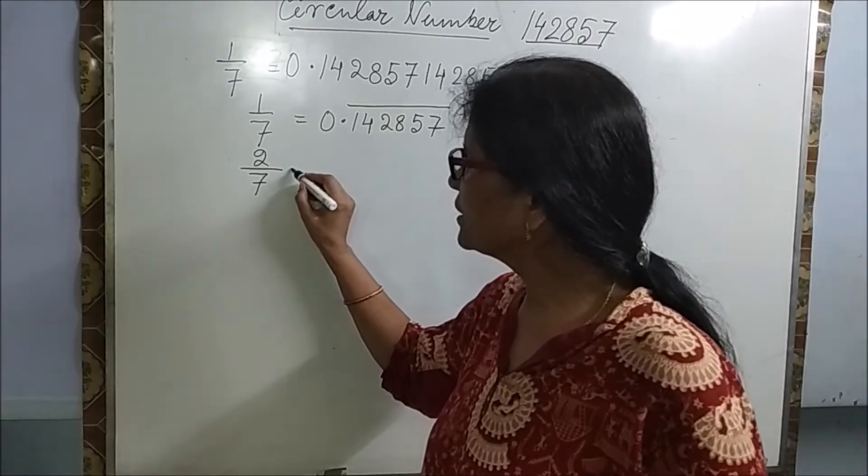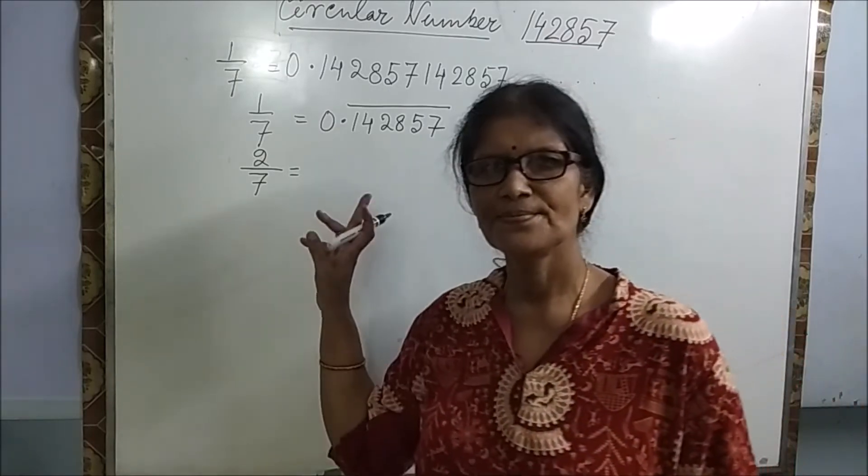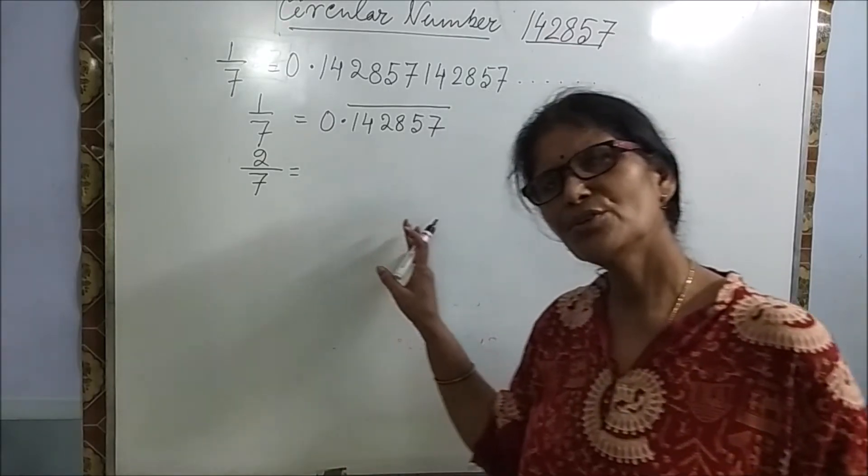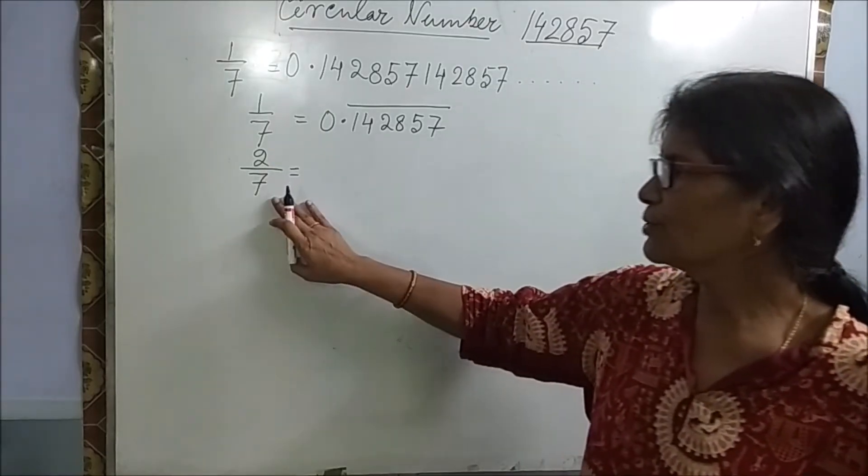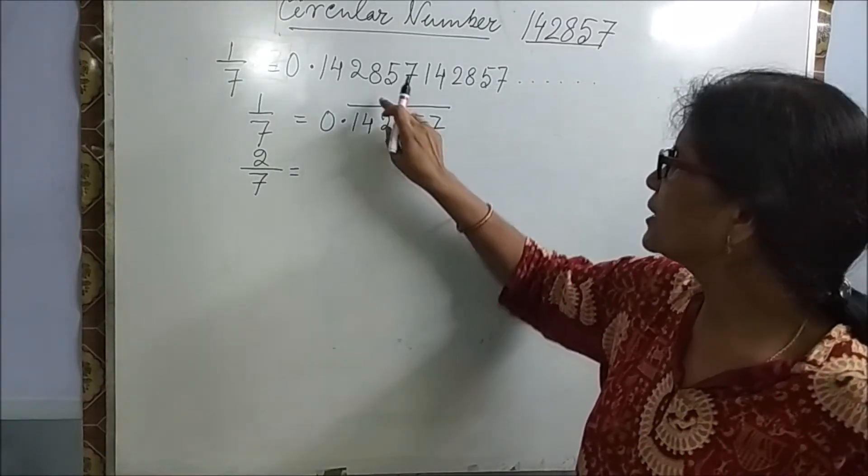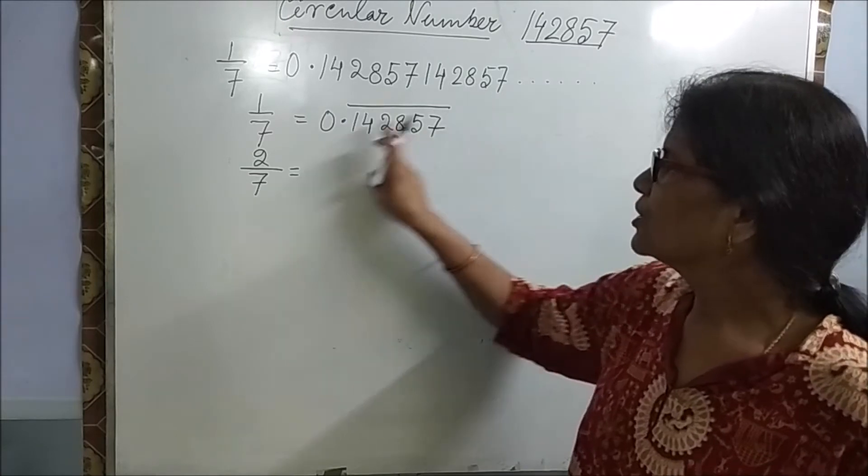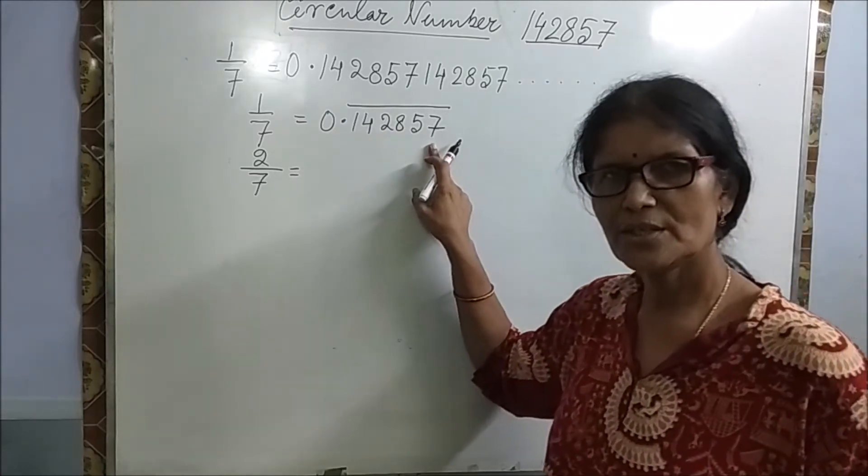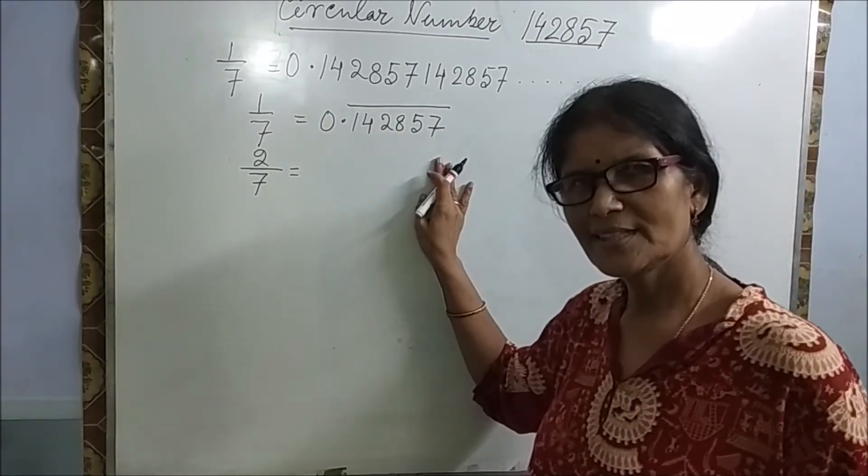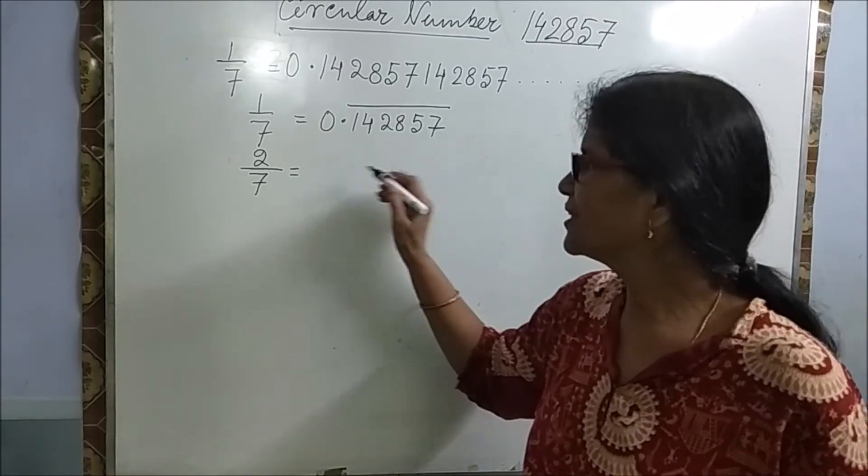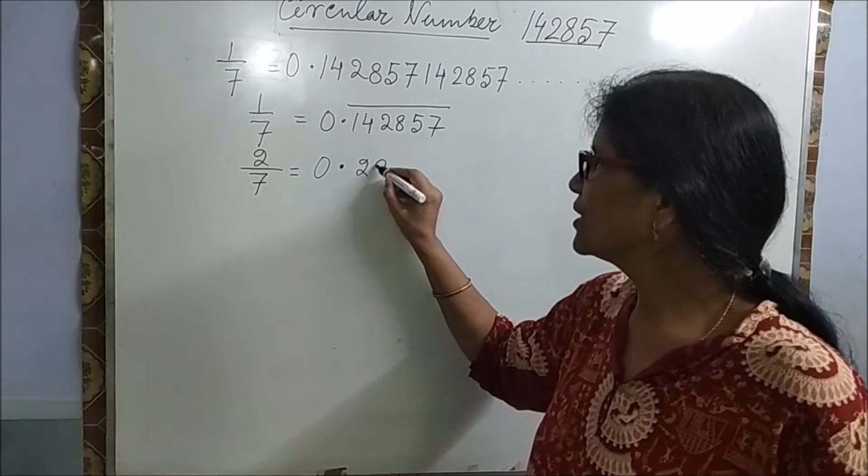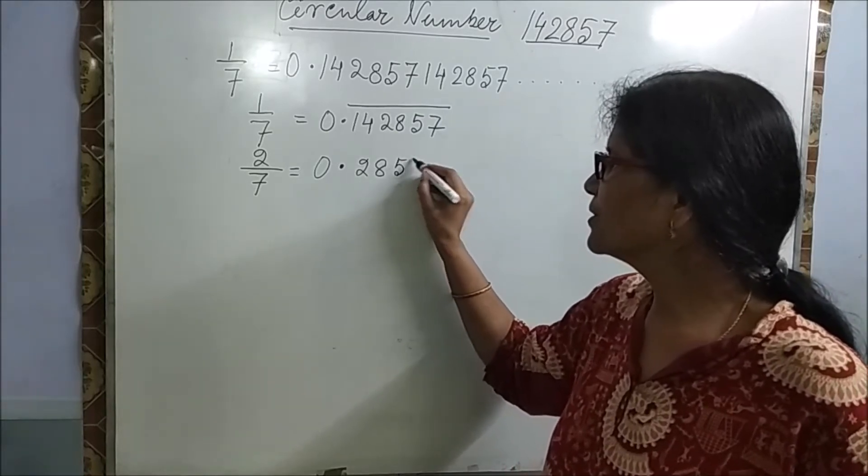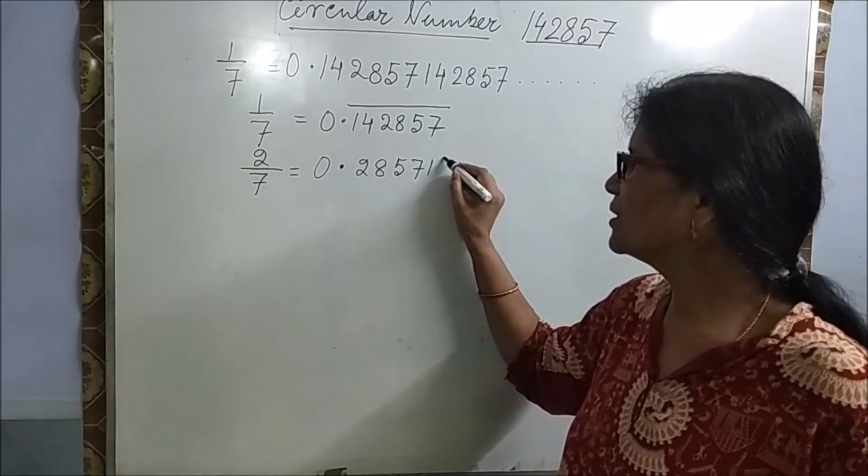Now see the magic. Now if the question is find 2 by 7, so what will you do? Either you will divide 7 with 2 or 2 division 7 or you will multiply 2 here. Now I am writing directly because this is a circular number. I write 0.285714.